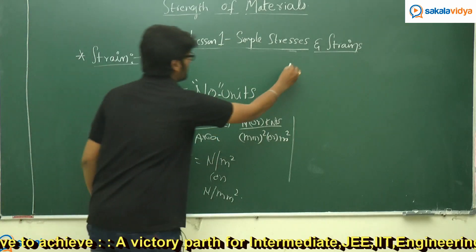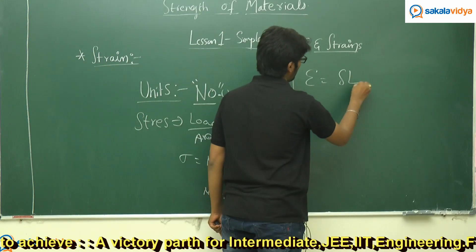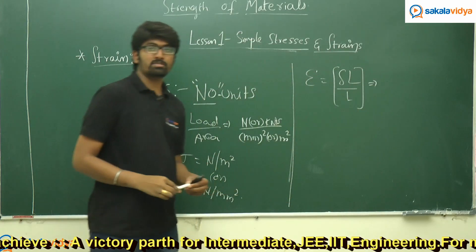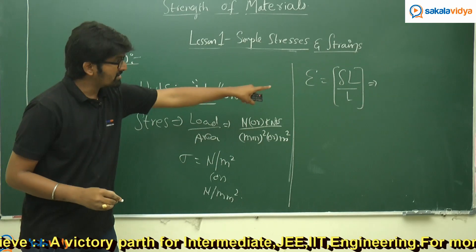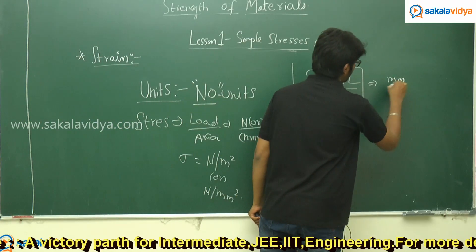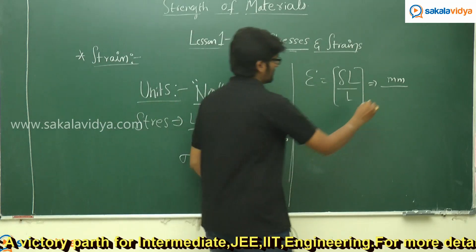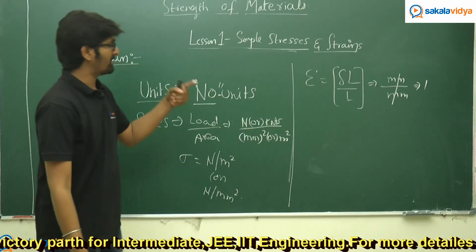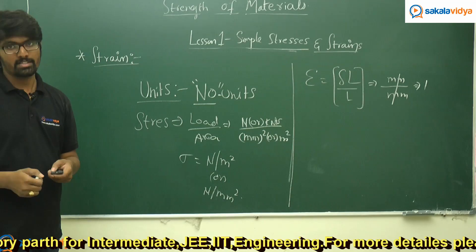Whereas, when it comes to strain, as we know, strain is nothing but change in length by original length — the deformation of a body relative to its original length. What are the units for length and change in length? Simply mm or meters. So meters by meters gives 1 — no units. Simply, for strain, we don't have any units, whereas for stresses, we are having units.